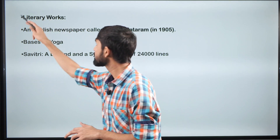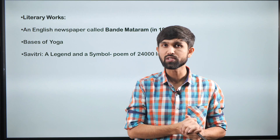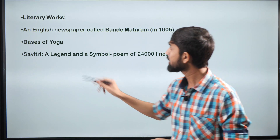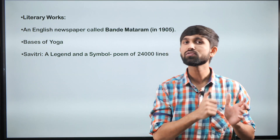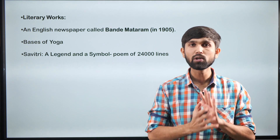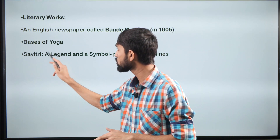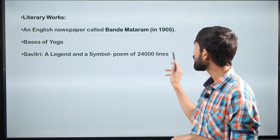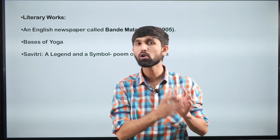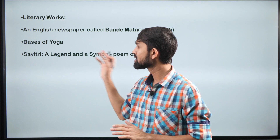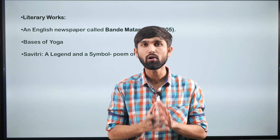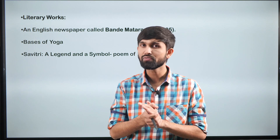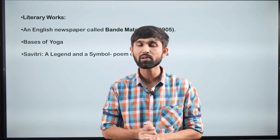Regarding his literary works, for a long time he was editor of the newspaper known as Bande Mataram. He also wrote a book called Basis of Yoga, among many others. The most important is his poem known as Savitri: A Legend and a Symbol — a long poem of 24,000 lines. This was a brief discussion on Aurobindo Ghosh's life and important points from the examination perspective. We finish our discussion here and will meet again tomorrow with the important articles from the newspaper. Thank you.